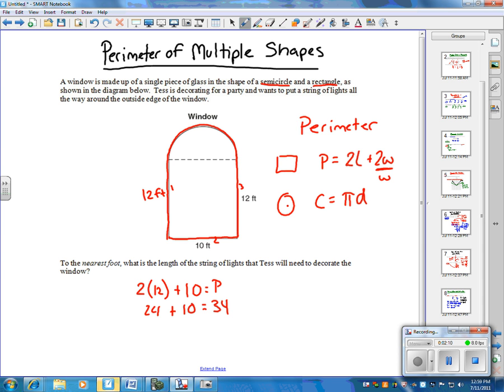Now, for the semicircle, we don't have a whole circle—we've only got half. So we're going to divide by two. The diameter is the distance across, and this distance is 10 feet. So to find the circumference, we've got π times 10, and then we'll divide that by two.